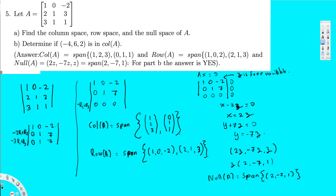The second part B is asking us to determine if the vector (minus 4, 6, 2) is in the column space of A. To answer this, we set up an equation using the pivot columns we already found — (1, 2, 3) and (0, 1, 1) — and form an augmented matrix with (minus 4, 6, 2) on the right-hand side.